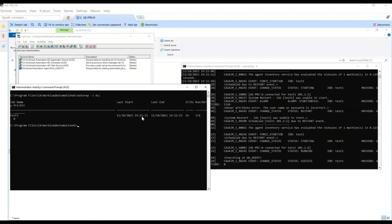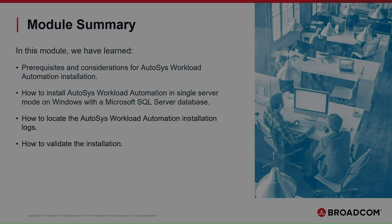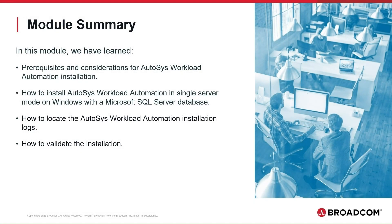We can also see the last start and end job execution dates. With this, we have completed the installation of Autosys on a Windows Server with a Microsoft SQL Server database. In this module, we have learned: prerequisites and considerations for Autosys Workload Automation installation; how to install Autosys Workload Automation in single-server mode on Windows with a Microsoft SQL Server database; how to locate the Autosys Workload Automation installation logs; and how to validate the installation.